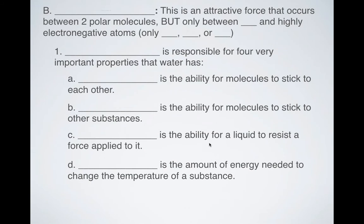Now, hydrogen bonding is a special type of attractive force. It occurs also between two polar molecules, but it specifically occurs only between hydrogen, hence the hydrogen bonding, and highly electronegative atoms like nitrogen, oxygen, or fluorine. So if you see H and you see N, O or F, and they're polar, that's probably going to be a hydrogen bond that's forming.